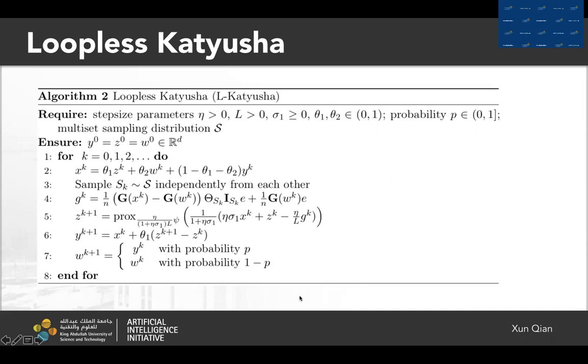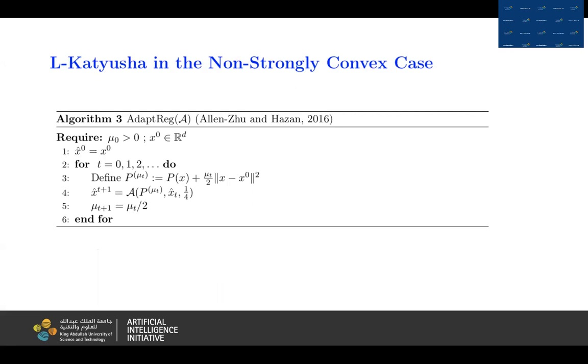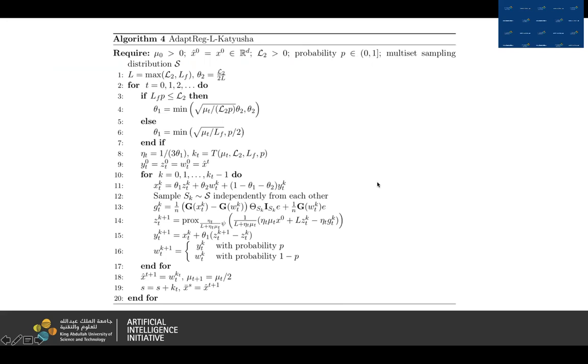In the strongly convex case, in the non-strongly convex case, we apply the black box oracle in this paper to obtain an accelerated sublinear rate. In step four, we use L-Katyusha. In the strongly convex case, we can also write this algorithm in details to algorithm four.